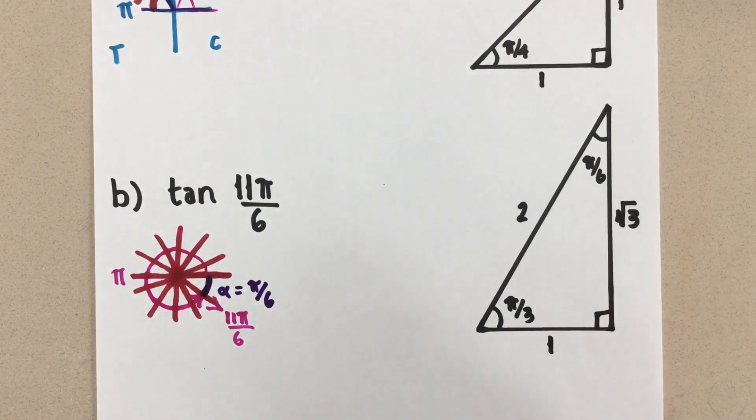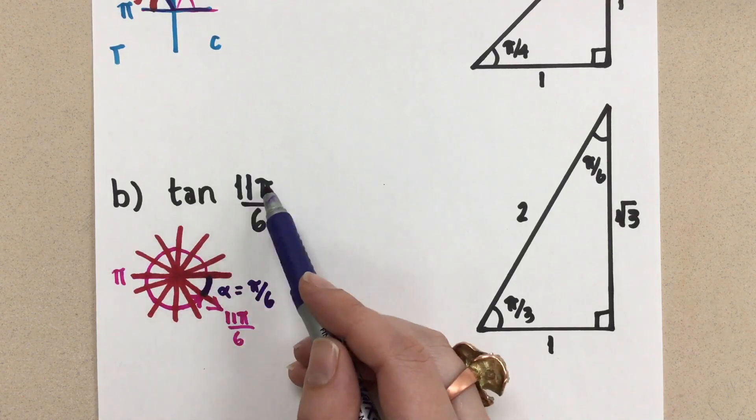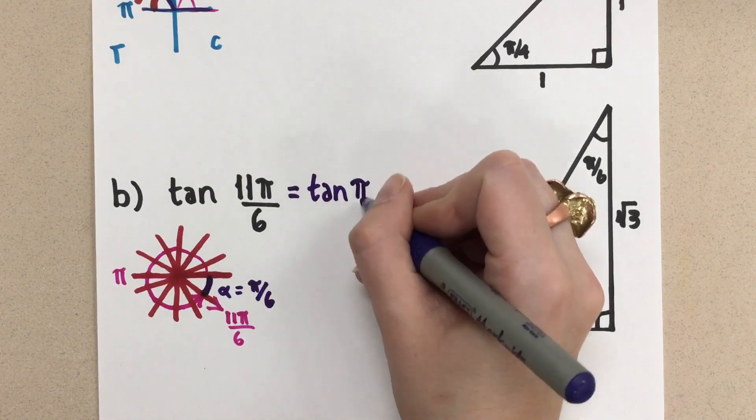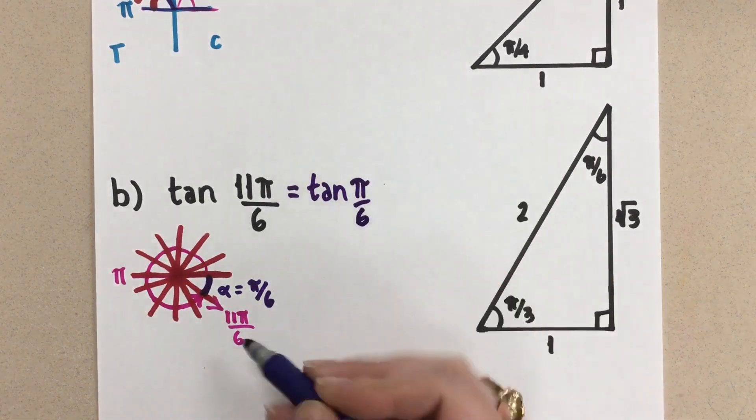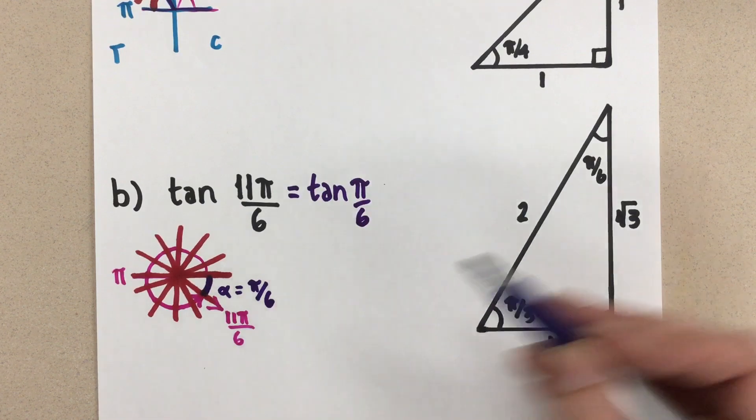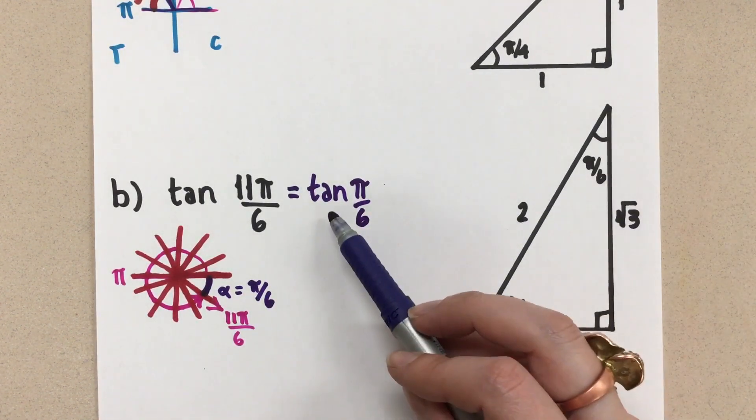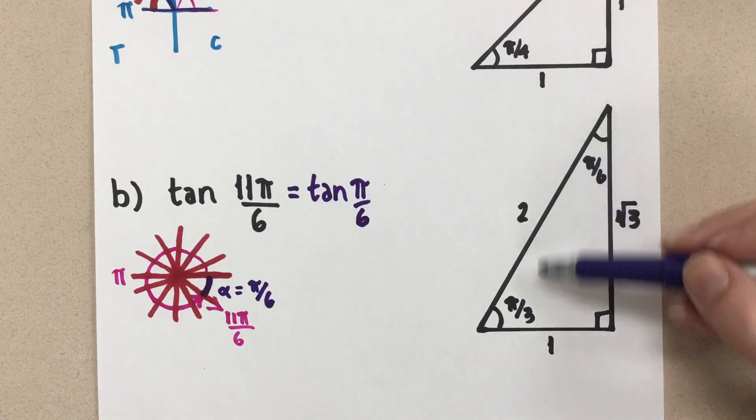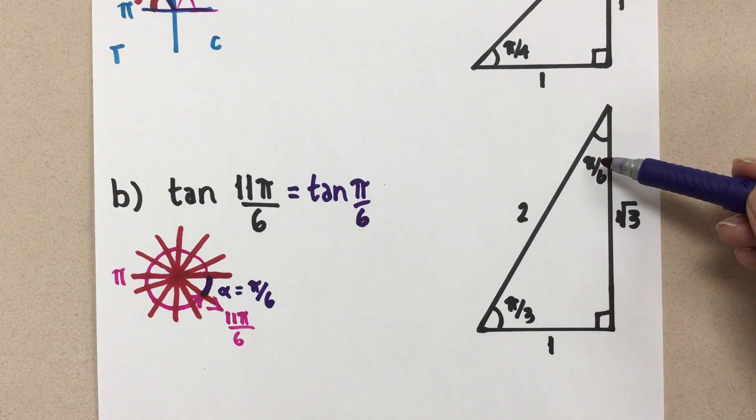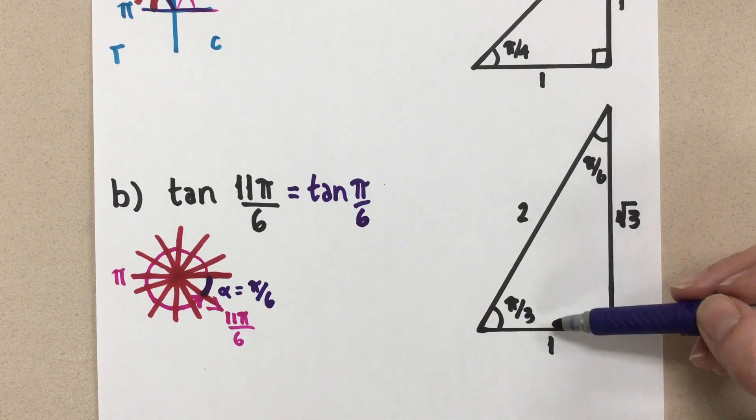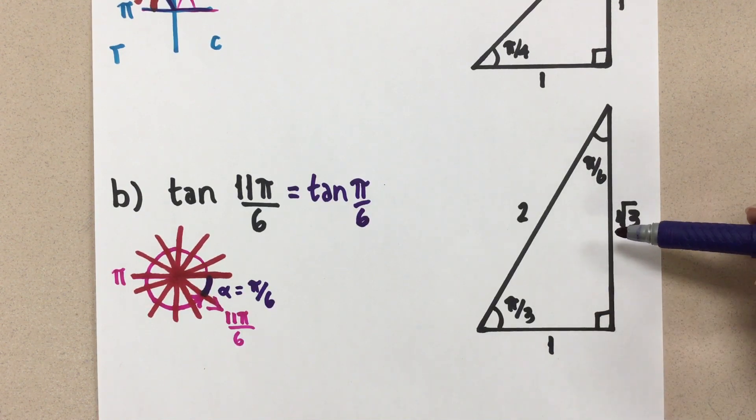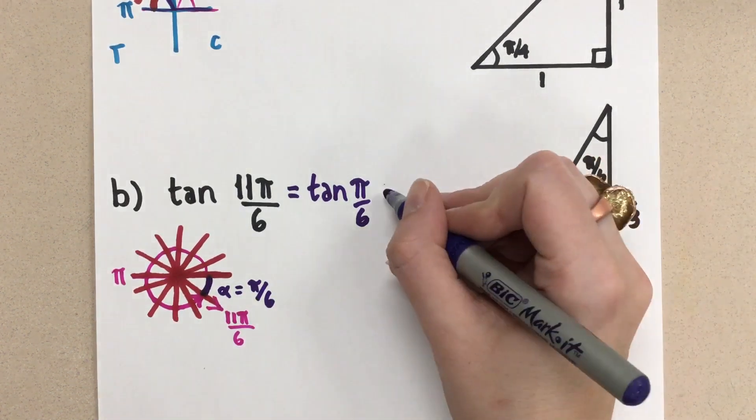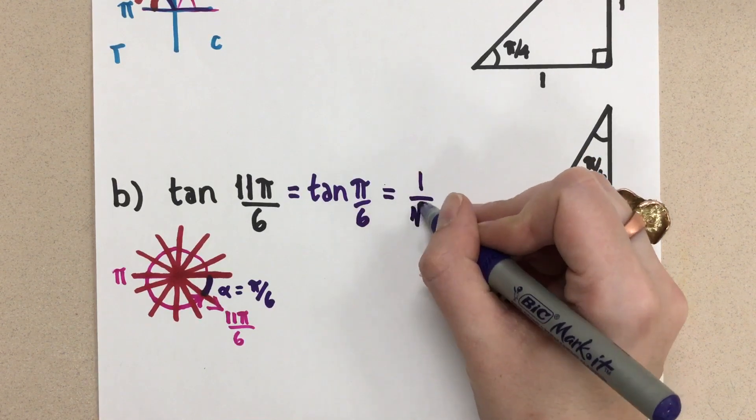So this tells me then that tangent of 11π over 6 is the same thing as tangent of π over 6 in the fourth quadrant. So that's going to help us with our cast rule after. So now, tangent of π over 6. If I look at my special triangle, I'm going to look at this one again. There's the angle, π over 6. Tangent is opposite over adjacent. So my value is going to be 1 over root 3. There's the exact value, like this.